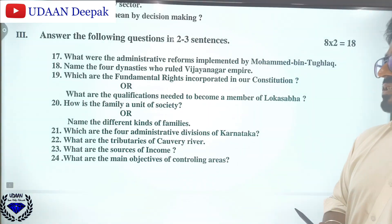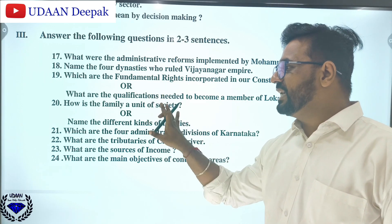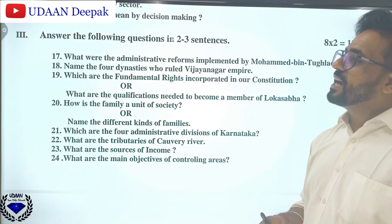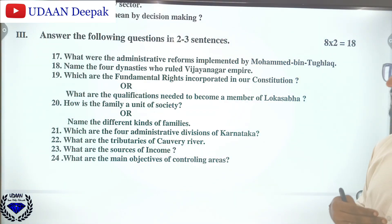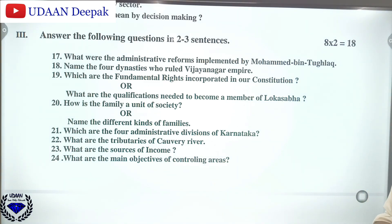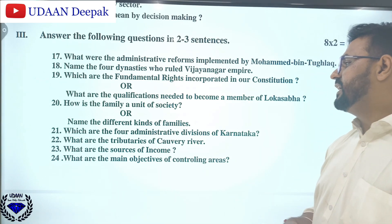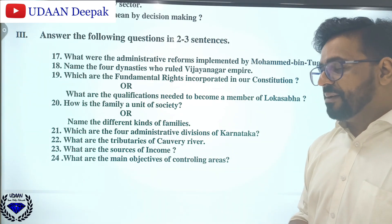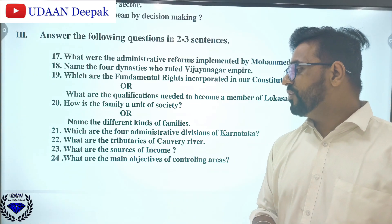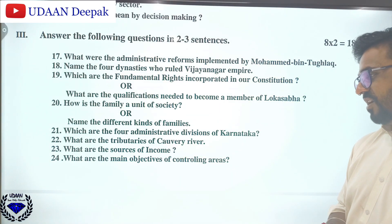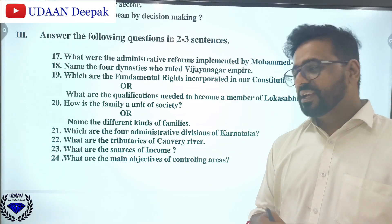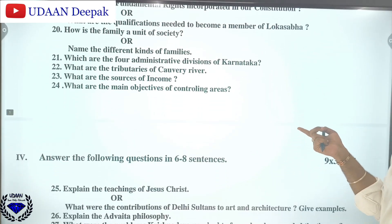Then you will be having two-mark questions with eight questions. Question number 17 is: What were the administrative reforms implemented by Muhammad bin Tughlaq? Name the four dynasties that ruled the Vijayanagara Empire. Which are the fundamental rights incorporated in our constitution? What are the qualifications needed to become a member of Lok Sabha? How is the family a unit of society — name different kinds of families? Which are the four administrative divisions of Karnataka? Tributaries of the Krishna River? Sources of income? Main objectives of controlled areas?